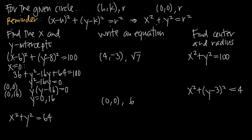To find the x-intercepts, we plug in zero for y. Zero minus eight gives negative eight, and negative eight squared gives 64. So we have (x minus 6) squared plus 64 equals 100. Solving for x, we find the x-intercept is (12, 0). The point (0, 0) was already listed as a y-intercept since the origin intersects both axes. So these are the x and y intercepts of the circle.